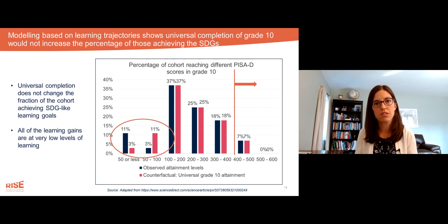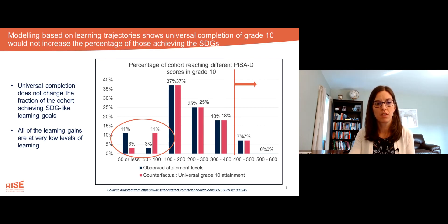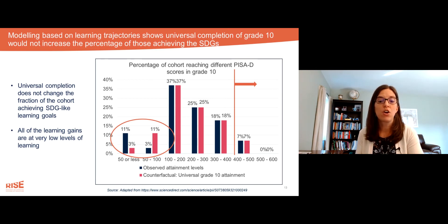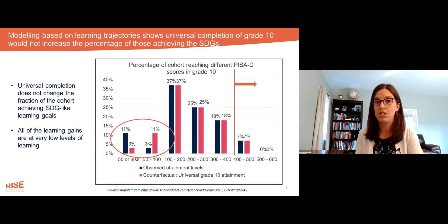Children scoring over 400 on this scale have reached the SDG for basic mathematics proficiency. You can see that at current schooling and learning levels, only about 7% of children in these PISA-D countries are reaching the SDG 4 goal.